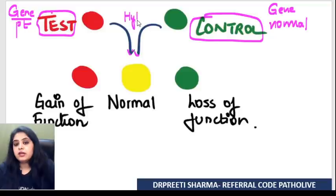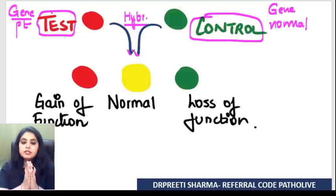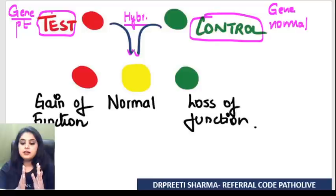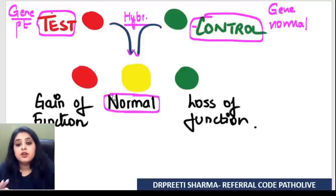You hybridize the patient's genes (red) and the control genes (green). If they are exactly the same, they should fuse equally — giving you a yellow color. Yellow means the patient and the normal are exactly the same, meaning the patient has normal genetics.